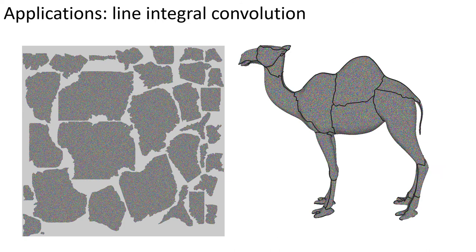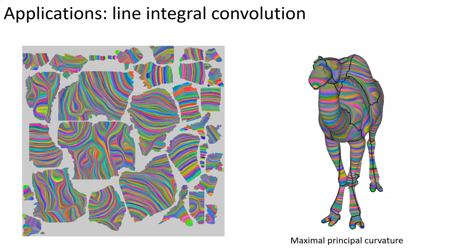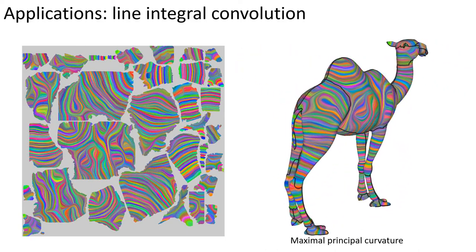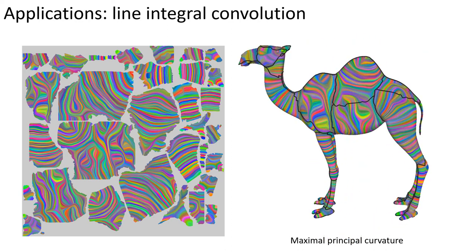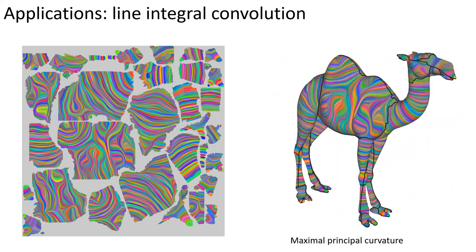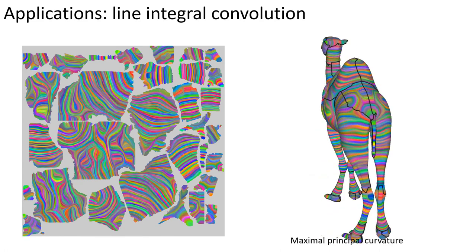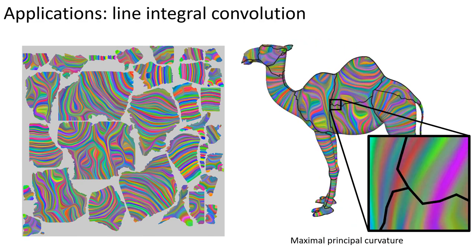Our final application is line-integral convolution, which visualizes a vector field by averaging a random texture over the flowlines. We do this by modifying the surface metric to shrink distances along the vector field, and then performing anisotropic diffusion. Here we show results using the maximum principal curvature directions. Note that the curves are uniformly spaced and seamless across chart boundaries.